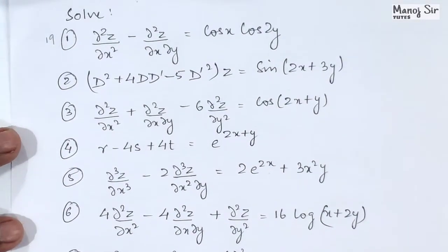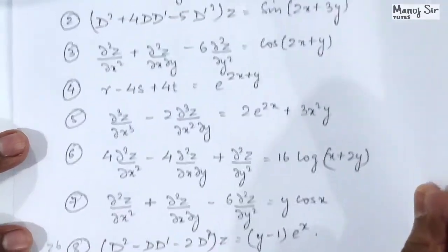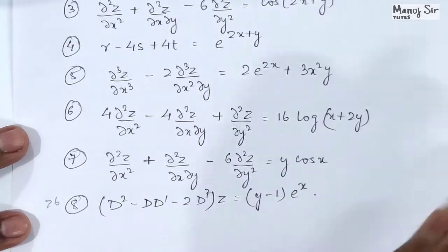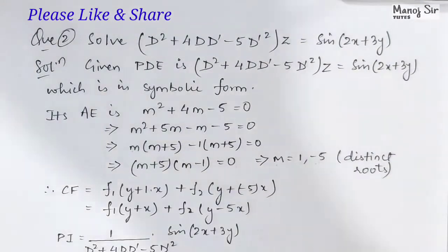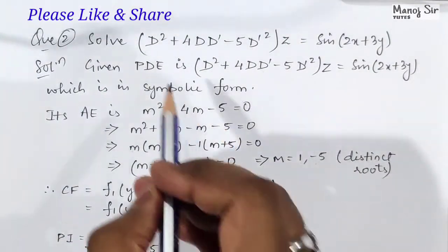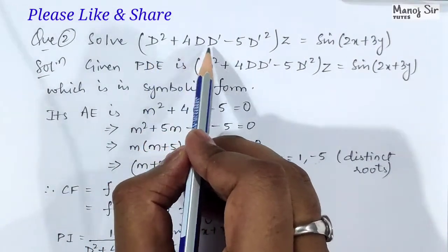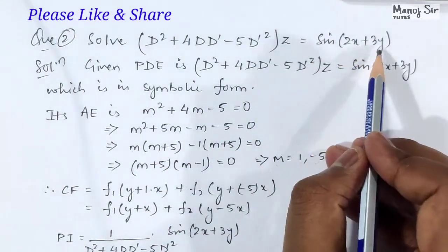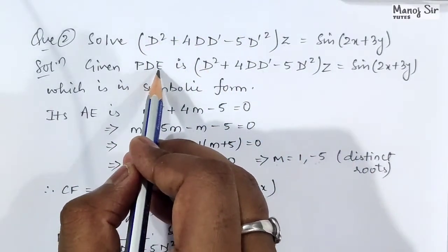If you go to the playlist, from video number 19 to video number 26 you will find 8 problems, and I am sure that after solving these 8 problems you can solve any problem belonging to this topic — homogeneous linear equations with constant coefficients. So let us start solving: solve (D² + 4DD' - 5D'²)z = sin(2x + 3y).